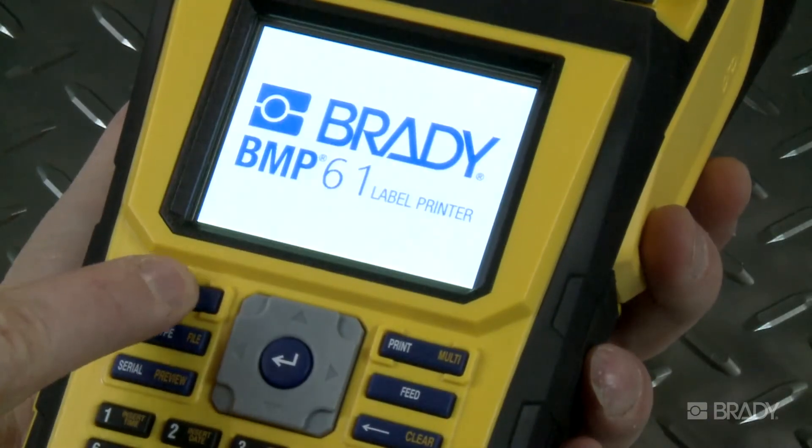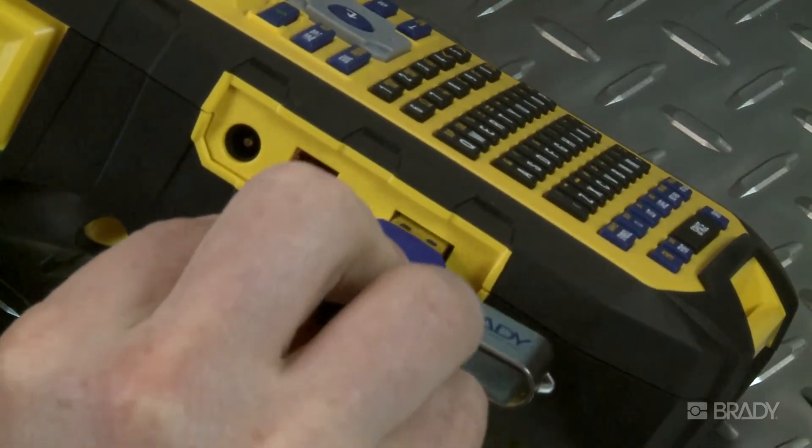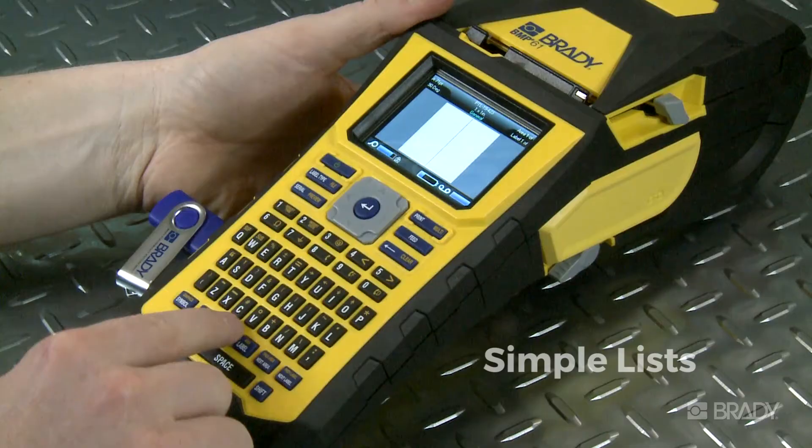Make sure that your BMP61 printer is turned on. Plug in the USB drive that holds the desired files, then press the list button.